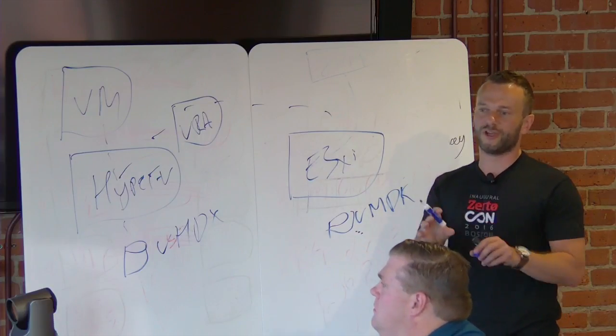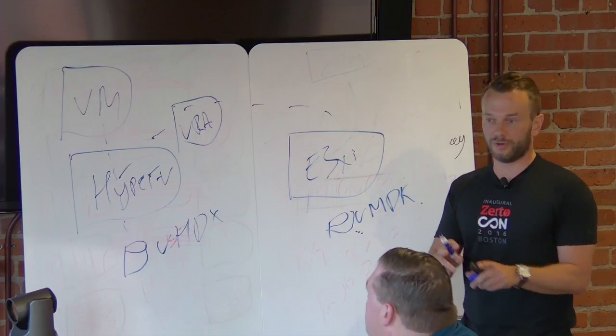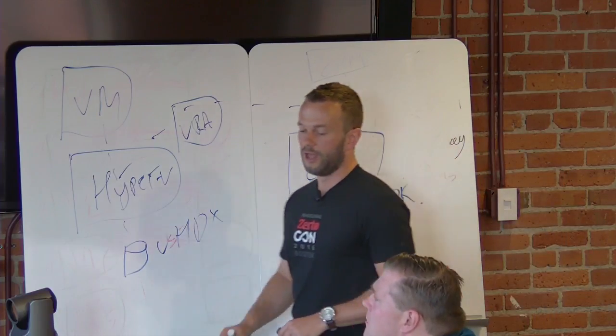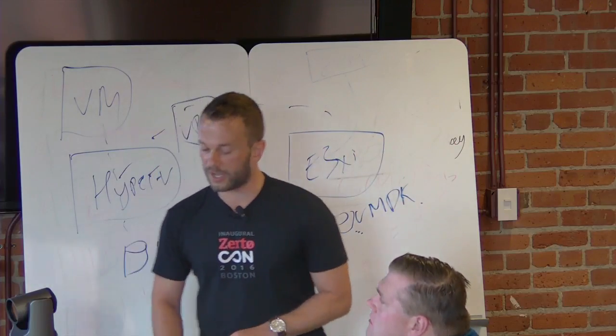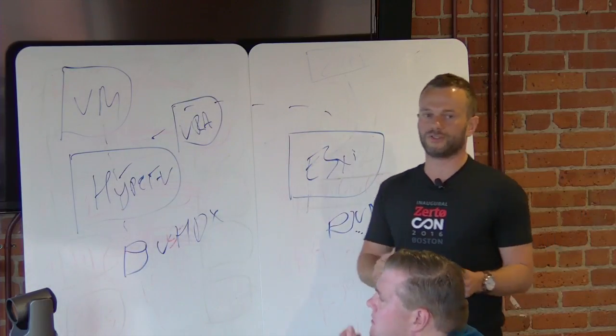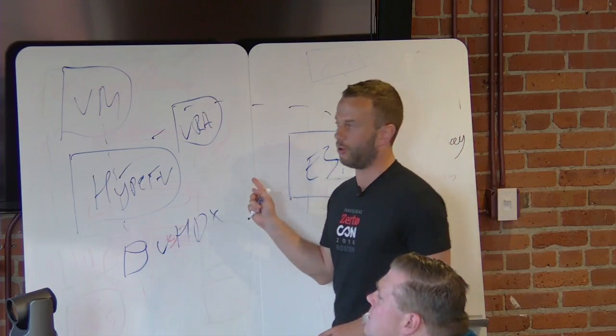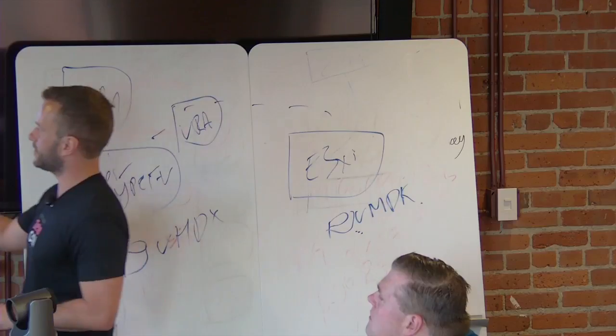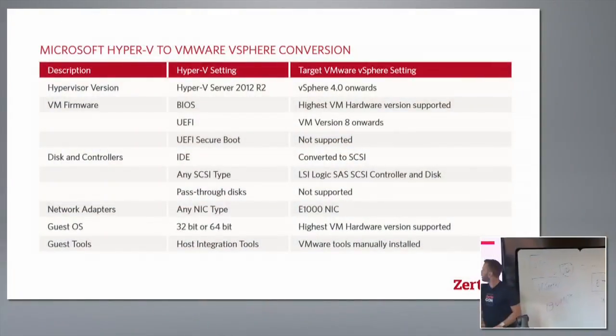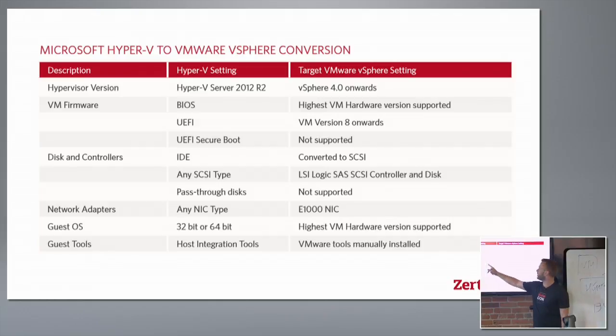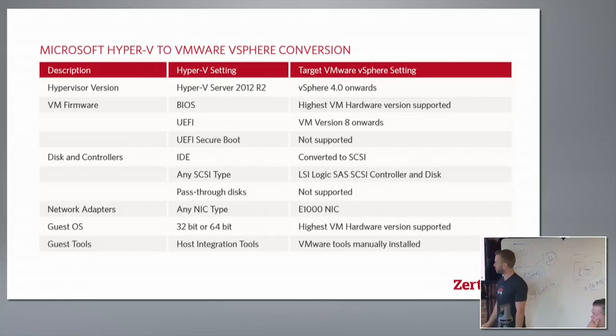The only challenge comes from the actual VM configuration settings itself, which we do have to convert and attach to these disks on failover. That is where it does get a little bit messy because it's not a question of what Zerto supports, it's a question of what does your target hypervisor support. To give you a perfect example, if you're using an IDE disk and you're going from Hyper-V to VMware, we have to convert that to SCSI, otherwise it won't let us create the VMX.